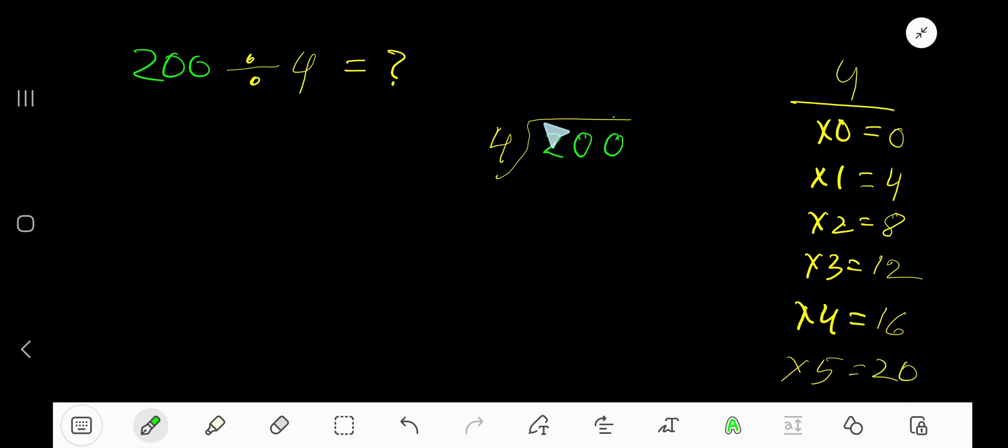As 2 is less than 4, so 0 times. 0 times 4 is 0. Subtract, we get 2.